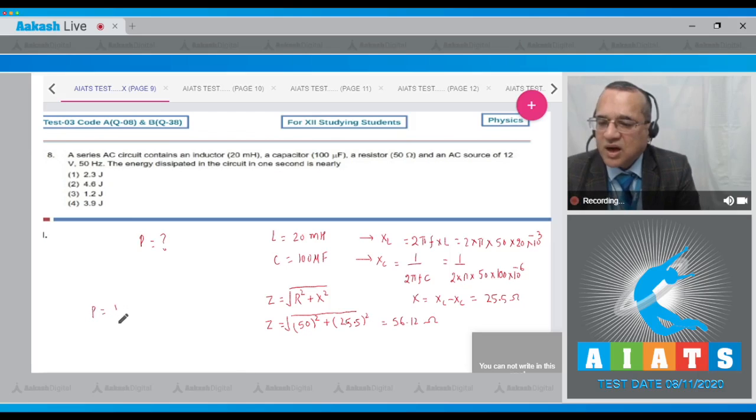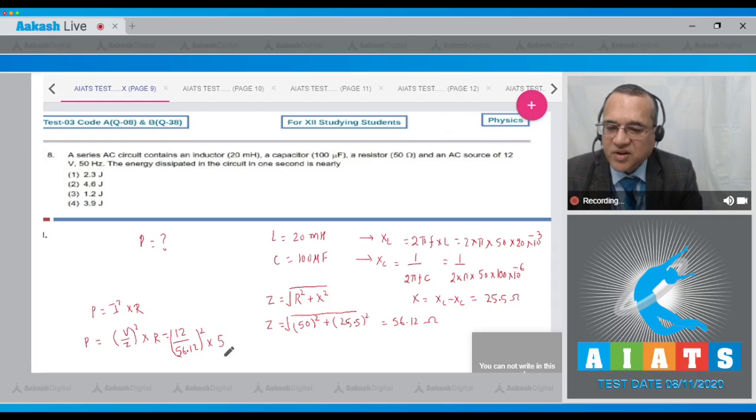Then the power is equal to I squared into the resistance. And how to find the current? The current is equal to V by Z squared into the R. So what is the V? V is given equal to 12 volt. And what is Z? 56.12 squared multiplied by R. The resistance of the circuit is given equal to 50. And if we solve it, this value comes to be 2.28, that is equal to 2.3. So the power is 2.3 joule per second. That is in watt. Therefore, the energy consumed per second is equal to 2.3 joule. So your answer to this question is option number 1.